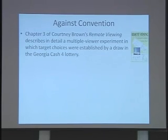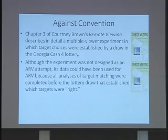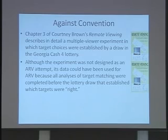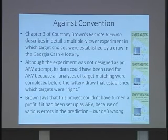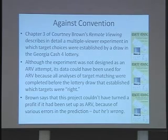Chapter three of Courtney Brown's remote viewing describes in detail a multi-viewer experiment in which target choices were ultimately established by a draw in the Georgia Cash Four lottery. It was not designed as an ARV attempt, but its data could have been used for ARV because all the analyses were completed before the lottery draw established which targets were right. Courtney himself says in the book that the project couldn't have turned a profit if set up as ARV because of various problems in the prediction — but he's actually wrong in saying it couldn't have been used.